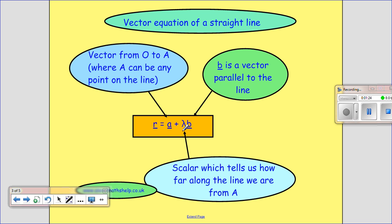And then lambda is some multiple, some number, scalar quantity, so three, six, half, times B, which is a vector which is parallel to the line.